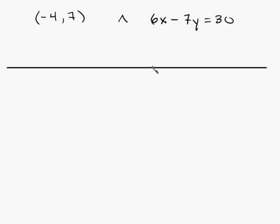For the most part, on an exam or in your homework, they'll probably give you a point and an equation. So, let's say for instance we got a point negative 4, 7, and an equation 6x minus 7y is equal to 30. I want you to make a small table, and we're going to split it in half.